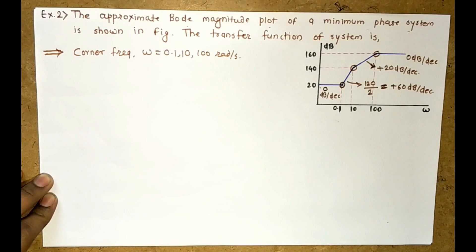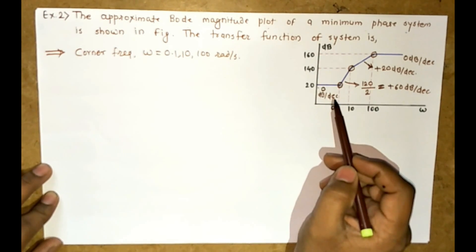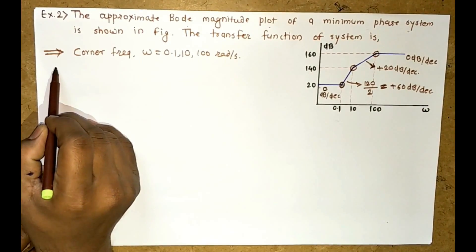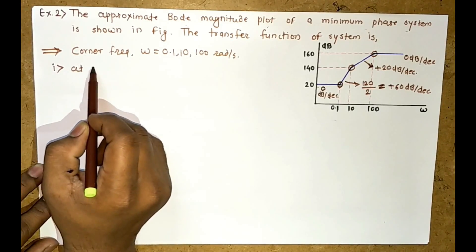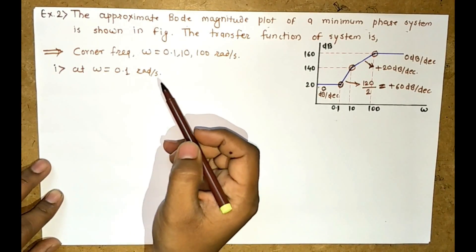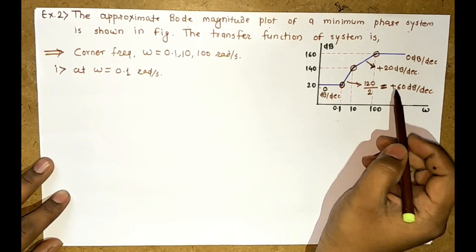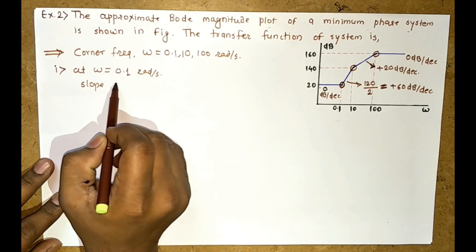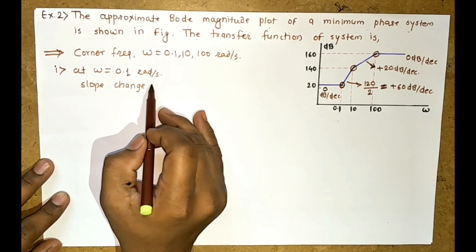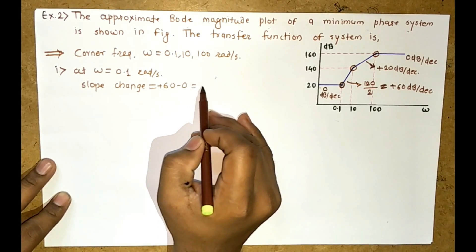Now for each corner frequency, let us proceed to solve. The first corner frequency is at ω = 0.1 radian per second. Here the slope is changing from 0 to +60 dB per decade, meaning +60 dB per decade slope is added here.